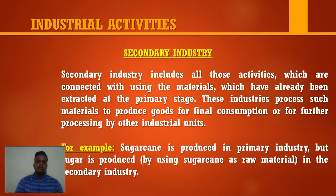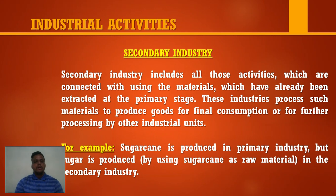Sugar cane is used in the primary industry, but sugar is produced from sugar cane as raw material in the secondary industry. The simple logic is that sugar cane is grown in the agriculture field — that is primary industry. In the secondary industry, they crush the sugar cane, store the juice, and then filter it to produce sugar. So secondary industry converts raw material into finished goods.